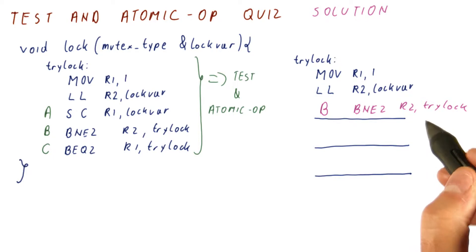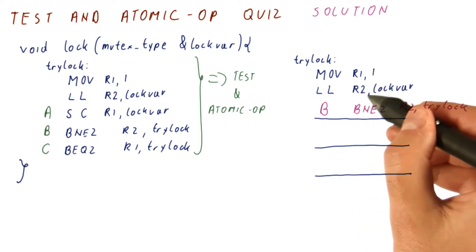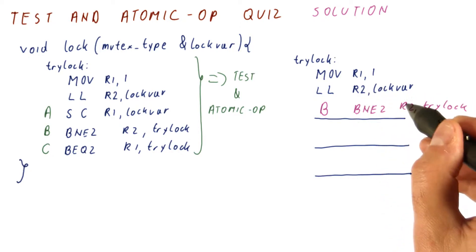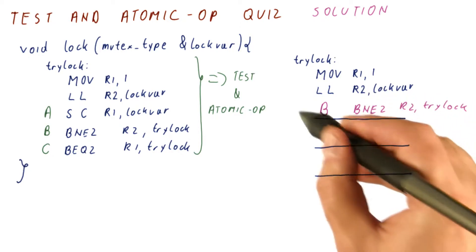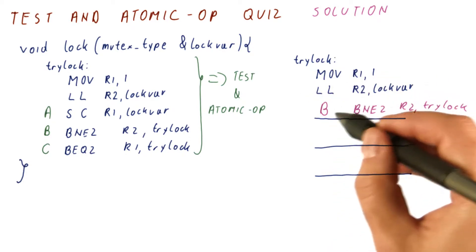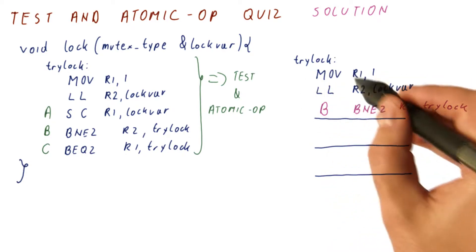I'm going to write it out to show you how it works. The idea is that if we load a busy value, meaning a value of 1, then R2 is not equal to 0 and we're just going to repeat this. So as long as the lock is busy, we just keep doing the load link.